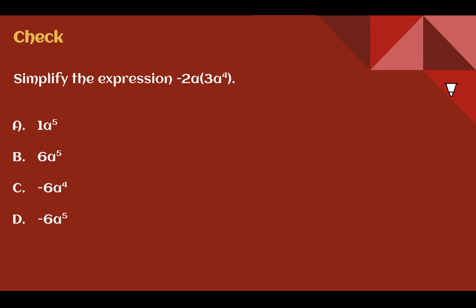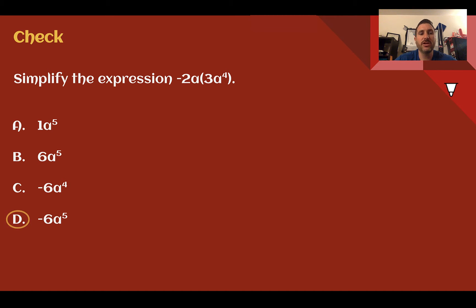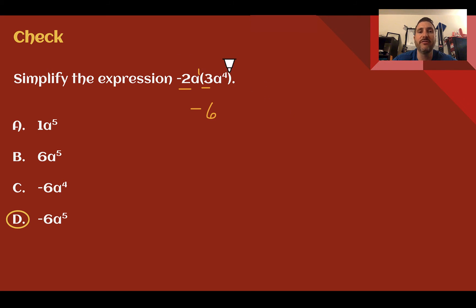Check your understanding: simplify the expression given. Pause the video now and complete the check. You should have got D, negative 6a to the fifth. To get that: negative 2 times 3 — multiply the coefficients first — gives negative 6. This a is really a to the 1; remember, no exponent means it's an exponent of 1. a to the 1 times a to the 4: add 1 plus 4, and there's where we get a to the fifth power.